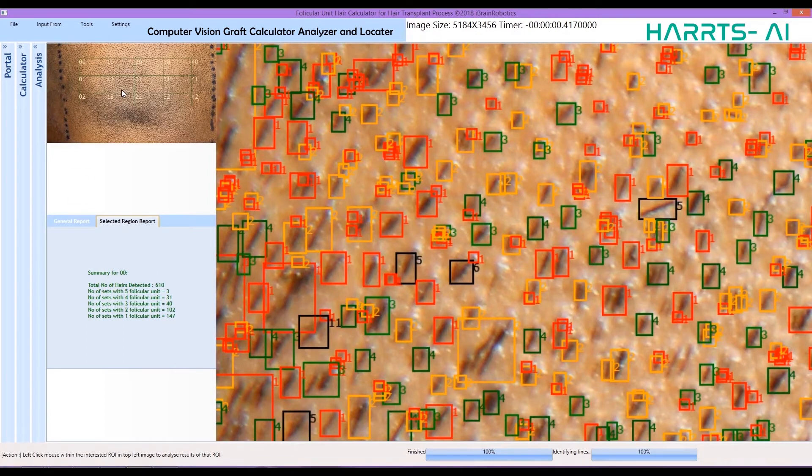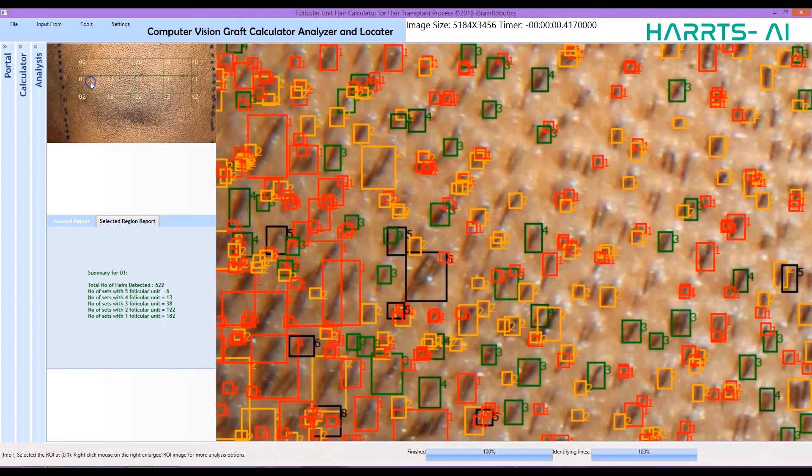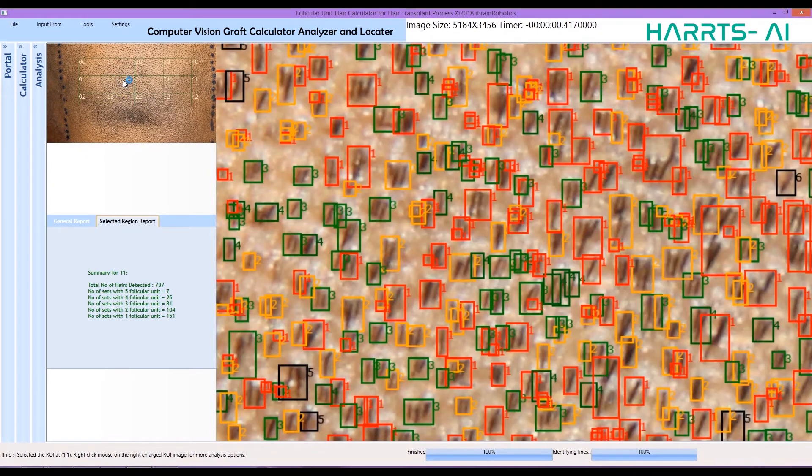Here you can see that the report is generated for area 0. This report is for area 1, this is for area 11, and this is for area 21.